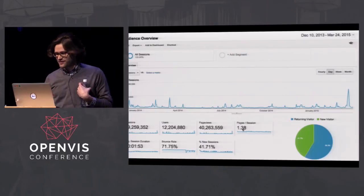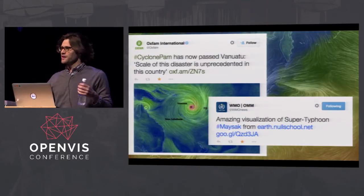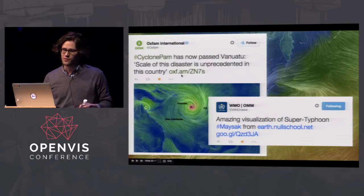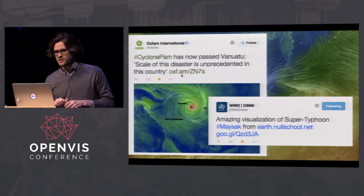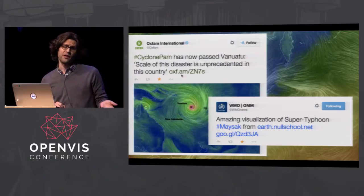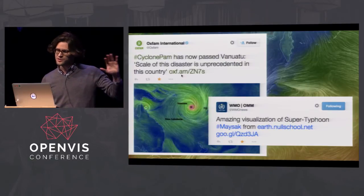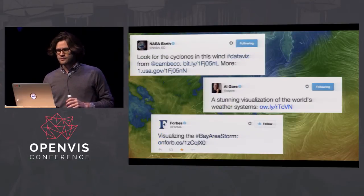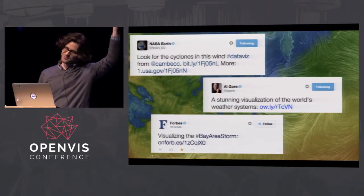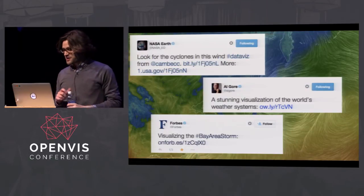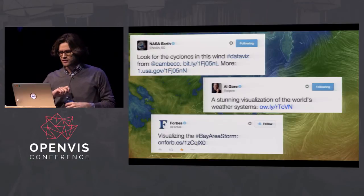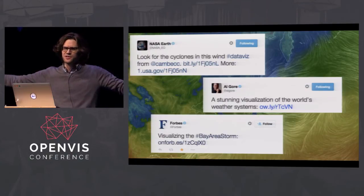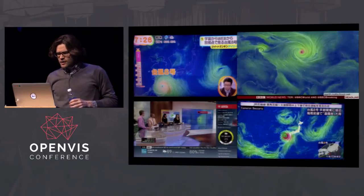The impact and engagement from the community was really great. Organizations like Oxfam International tweeted out using imagery from the site to inform people about Cyclone Pam, which decimated Vanuatu about three or four weeks ago. The World Meteorological Organization — the weather arm of the UN — was tweeting about the site. NASA Earth Observatory, Al Gore — he was actually one of the first to tweet about this. Forbes Magazine tweeted it out when a big storm hit the Bay Area over the winter.